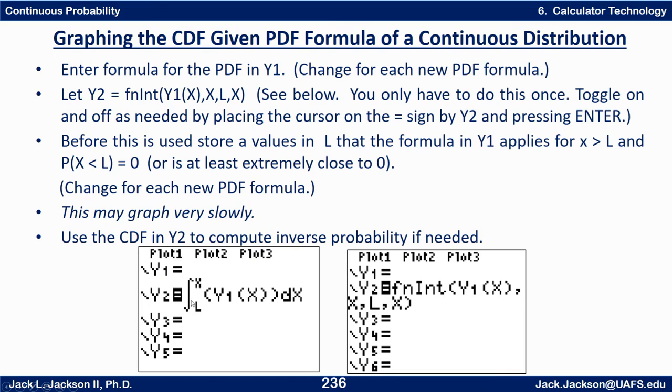Now warning, graphing this, what this is doing is doing thousands of calculations to get the graph. And so it may turn out to graph very slowly. I mean, quite slowly, maybe a few minutes. But once you can do this, then you can graph the inverse, you can graph the Y value that you need here and do a calc intersect to find an inverse probability. Really that's the only thing you would need this for, is for inverse probabilities.